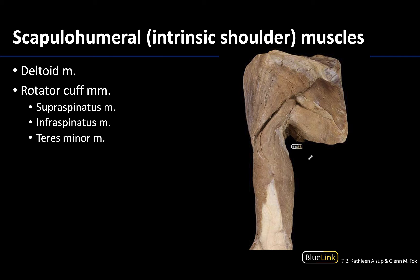Let's start with the big one, which is the deltoid muscle. I often think of it as the shoulder cap — it covers the shoulder and makes that rounded contour we associate with the shoulder. It is shaped like an inverted delta. It has proximal attachments on the acromion and the spine of the scapula, as well as some attachment on the clavicle, and its distal attachment is on the humerus.